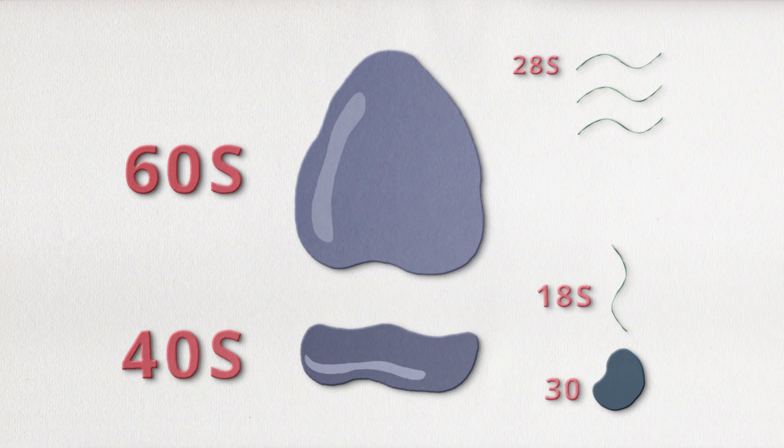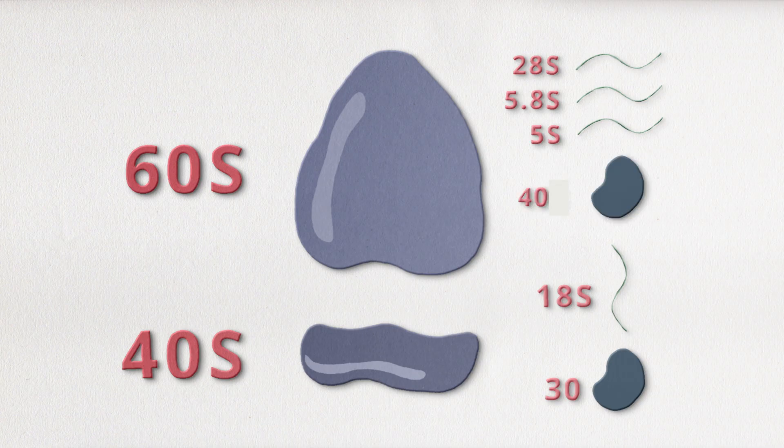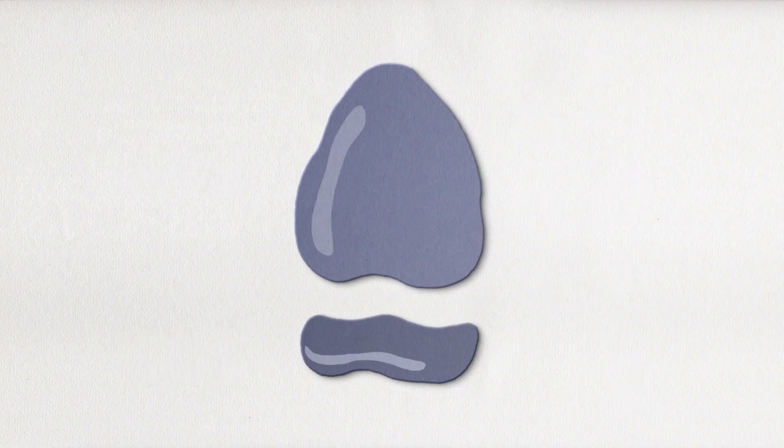28S rRNA, 5.8S rRNA, and 5S rRNA. This subunit also contains proteins, 40 of them. After a better understanding of what each subunit's structure is, how do they join together?